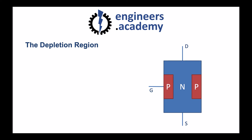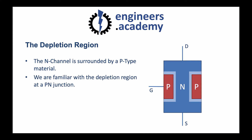In our previous video, we covered that P-N junctions form a depletion region, and it's exactly the same for a field effect transistor. The N-channel is surrounded by P-type material which sits around it. We know that these two doped materials, when they meet, form a region called the depletion region. This depletion region narrows the available N-channel. You can see that we've now constricted the amount of space in the centre. As the depletion region grows, that N-channel will get smaller.